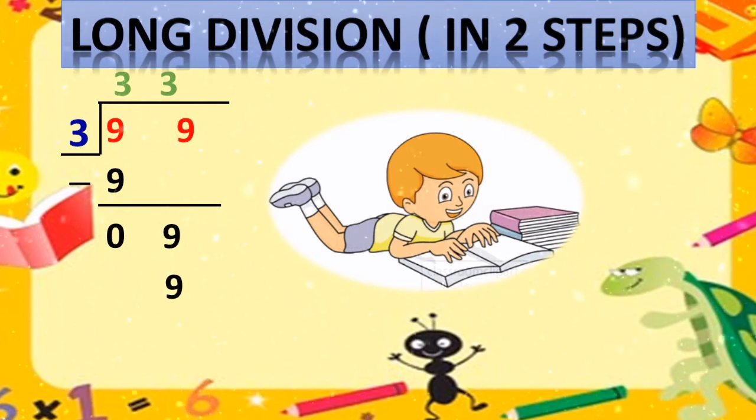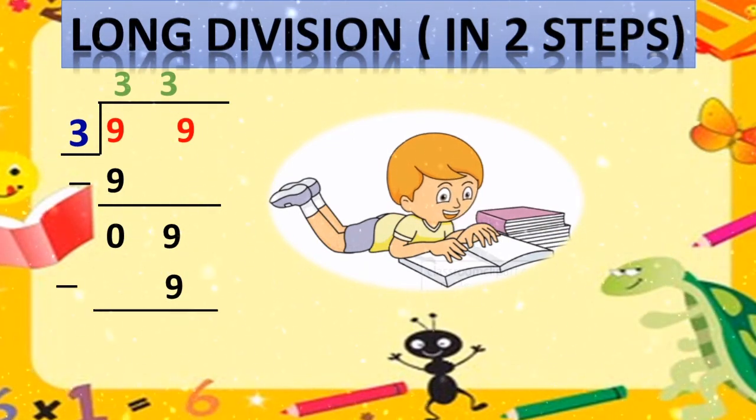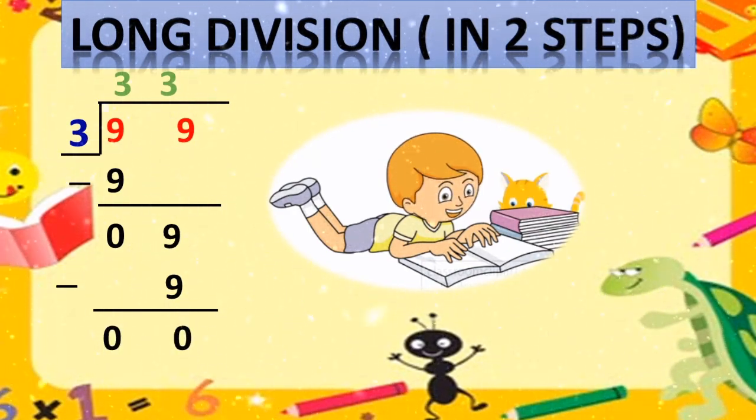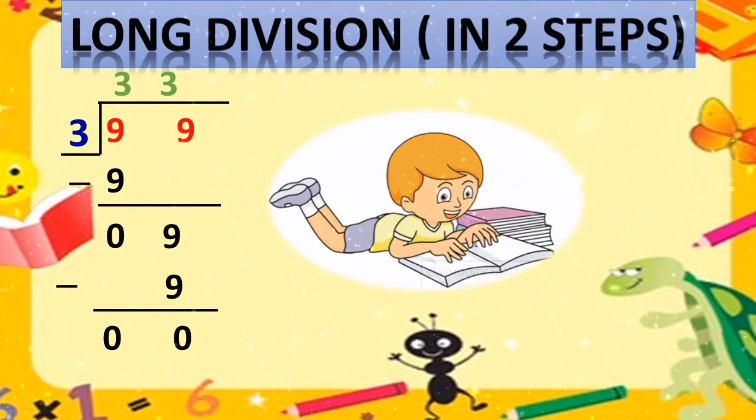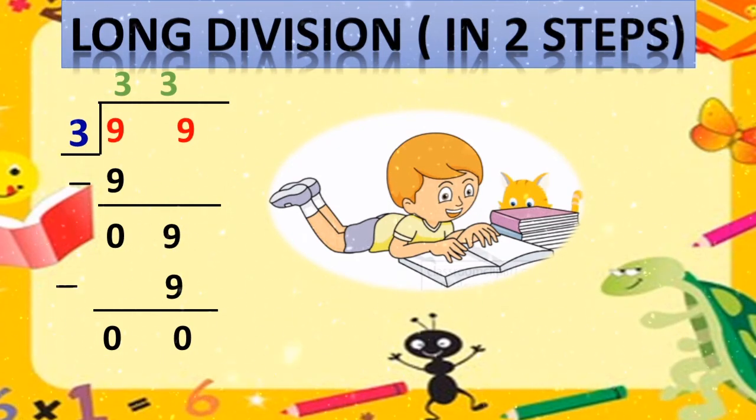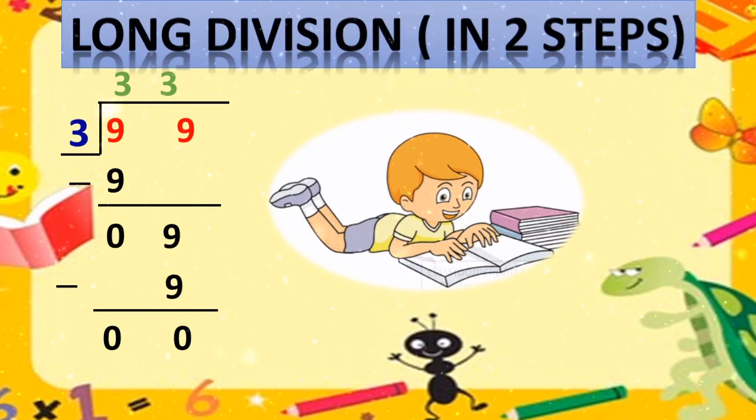3 threes are 9. Again, aap yahan bhi kya kar diya? Subtraction kar diya? Yes. 9 minus 9? 0. Yes. Aap jante hain ki agar hum 0 ko 0 se minus karayen to humare paas answer 0 aata hai. So here the result or the quotient of the sum is 33, and here the remainder is 0.